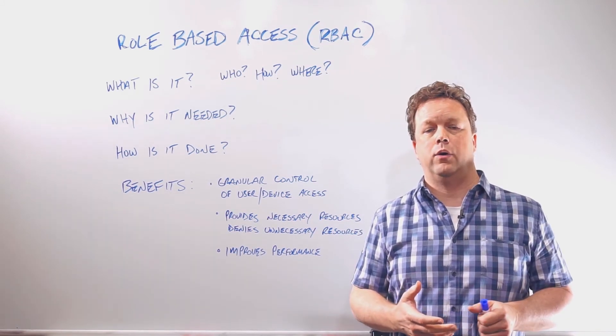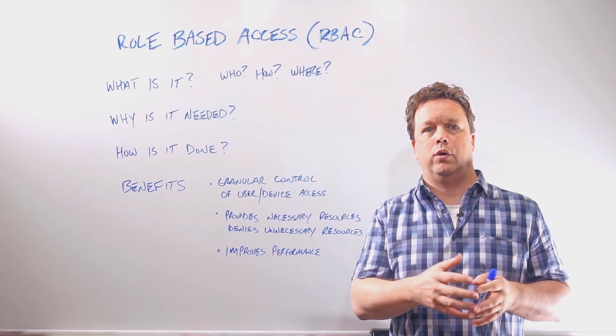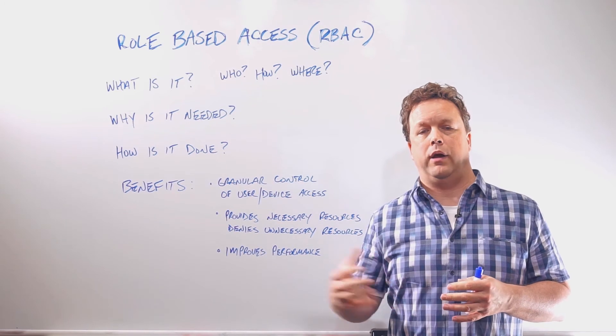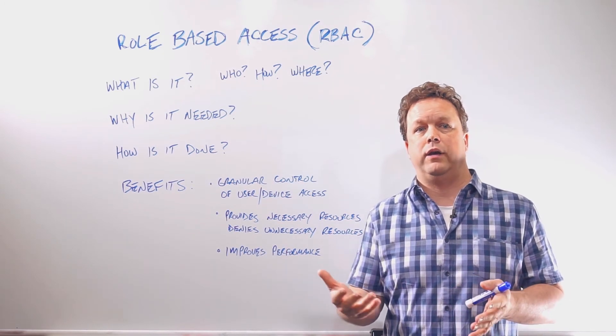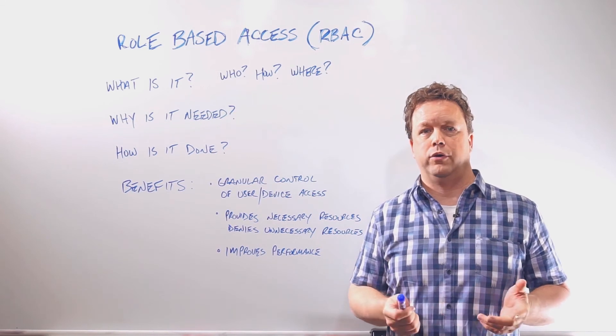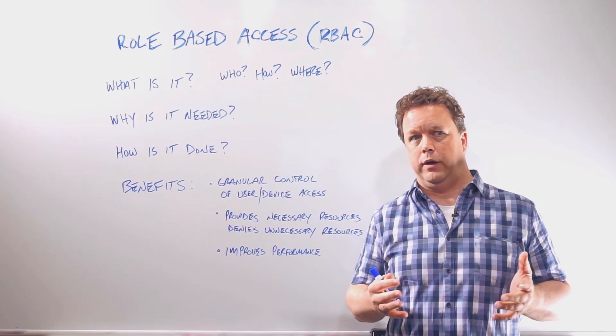So once the identity is known, we can apply a role to that user or device. And then once the role is known, we can apply a firewall policy or an ACL to that role. The policies can be as restrictive or as loose as you want it to be. It's totally up to you.